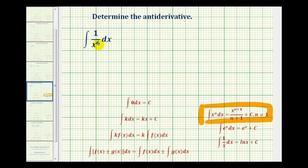But we can change the form of this by moving x to the sixth up into the numerator. So we can rewrite this as x to the power of negative six, giving us the indefinite integral of x to the negative six with respect to x.